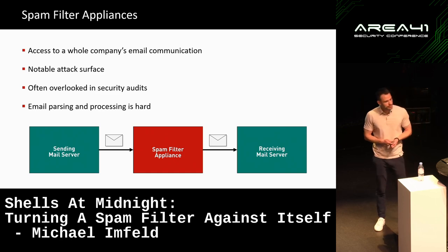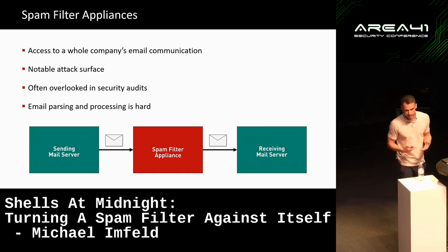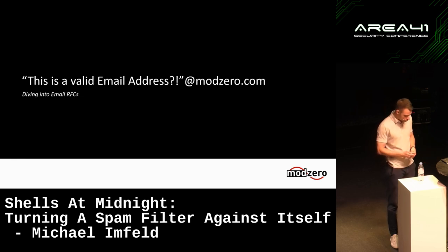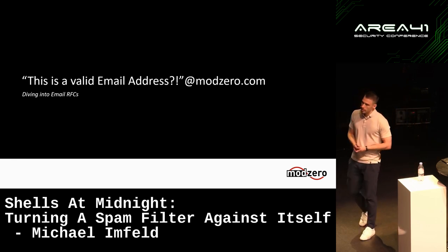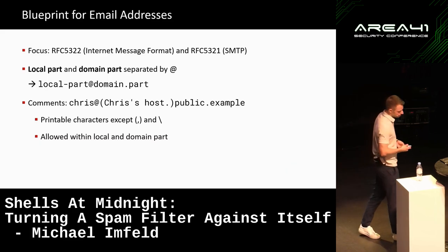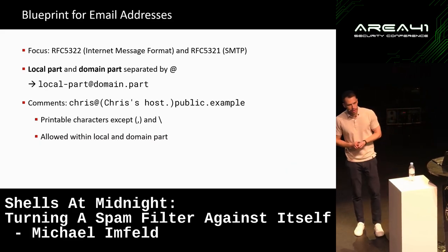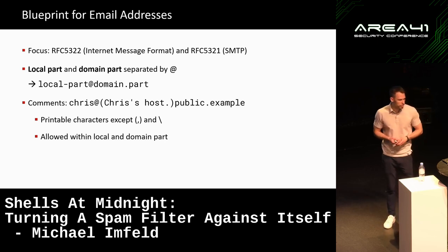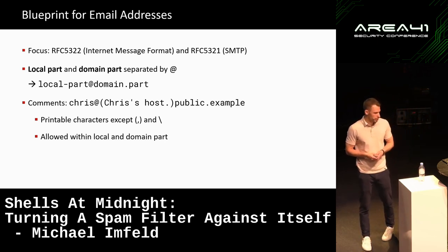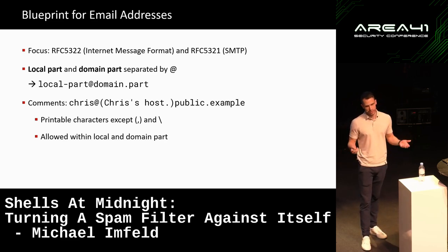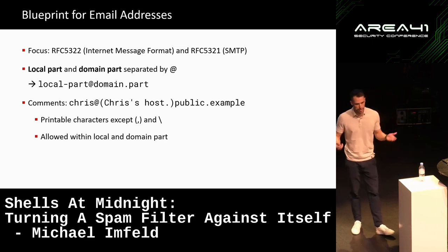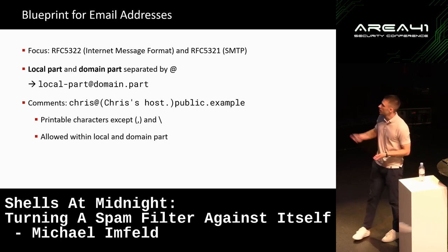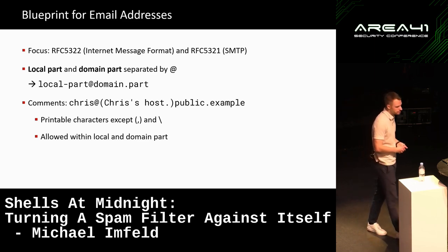Spam filters are especially interesting because, as we found, email parsing is hard. Let's talk about how email addresses are constructed. There are lots of different RFCs around emailing in general; I'll focus on two: the internet message format and the SMTP one. At the end of the day, it always depends on the mail server you're interacting with — just because there's an RFC doesn't mean they're all compliant. Basics first: we always have a local part and a domain part, separated by an at sign.